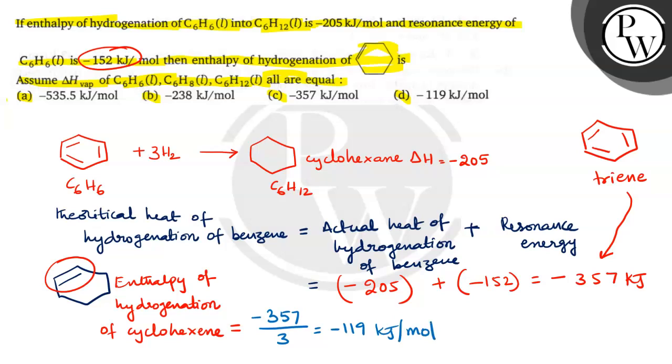Once again, for benzene hydrogenation, 205. Resonance energy also given. If you add these two, you will get the theoretical heat of hydrogenation. If we are assuming as a triene, for three double bonds, this much energy is required to break. For one double bond, how much? So therefore, that energy divided by 3, we got minus 119 kilojoules per mole. So which option is correct? Option D is correct. Hope you understood. Good luck.